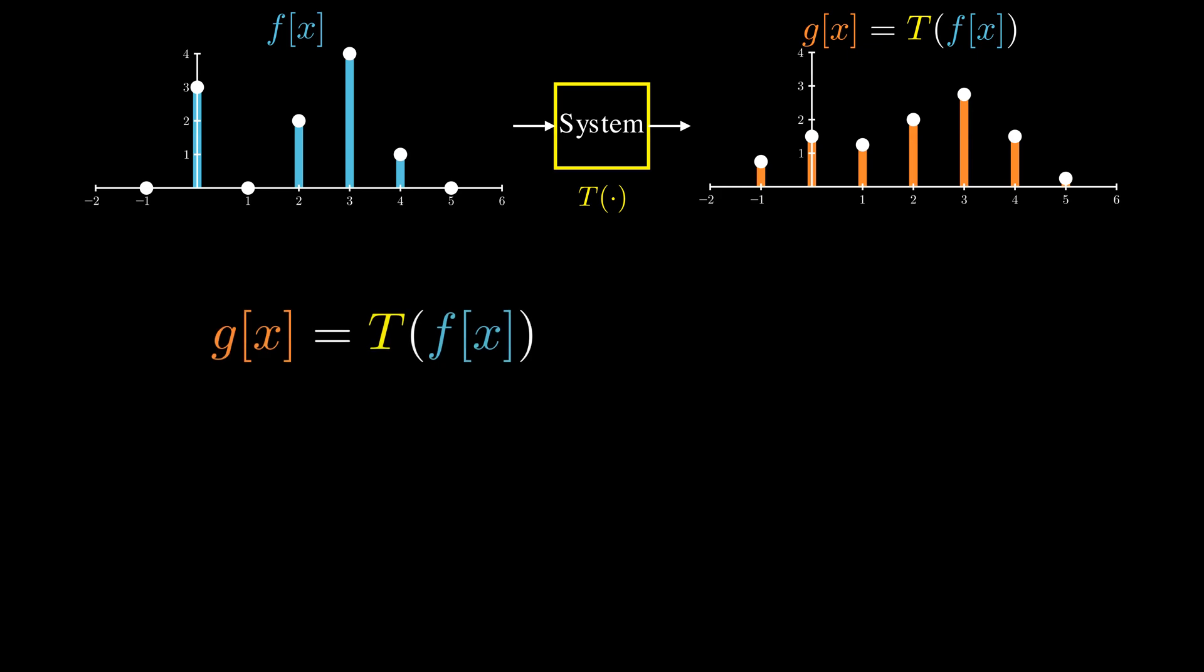Let's formalize this. We start with expressing the input signal as a summation of scaled and shifted impulse signals. The linearity lets us move the function T inside the sum. Now, because the system is also shift invariant, the system's response to an impulse at position k is just the impulse response h shifted by k.